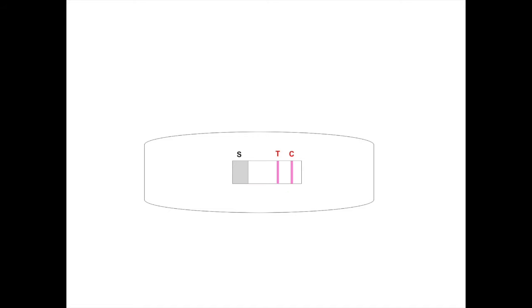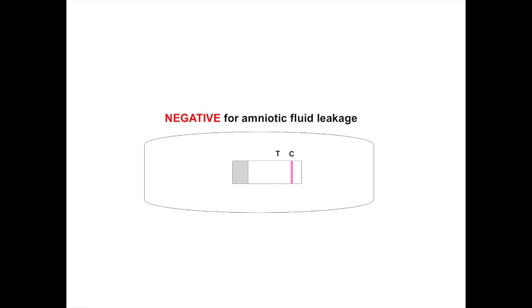Distinct purple bars appear within 5 minutes. If both control and test bars appear, the assay is interpreted as positive for amniotic fluid leakage. If only the control bar is visible, the assay is interpreted as negative for leakage of amniotic fluid, and therefore the leaking fluid might be urine or semen.